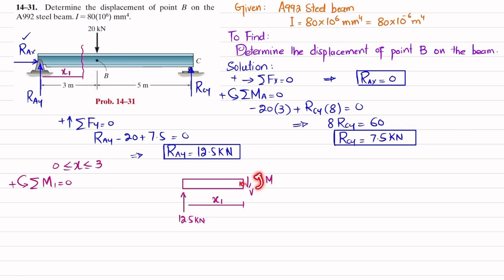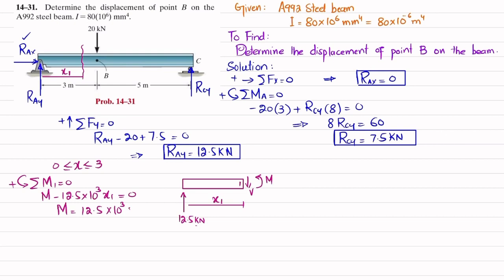The moment M is counterclockwise (positive), and the moment due to 12.5 kN over distance x₁ is clockwise (negative). Setting the sum to zero: M − 12.5×10³·x₁ = 0, giving M = 12.5×10³·x₁. This moment equation is valid for 0 ≤ x₁ ≤ 3 m.